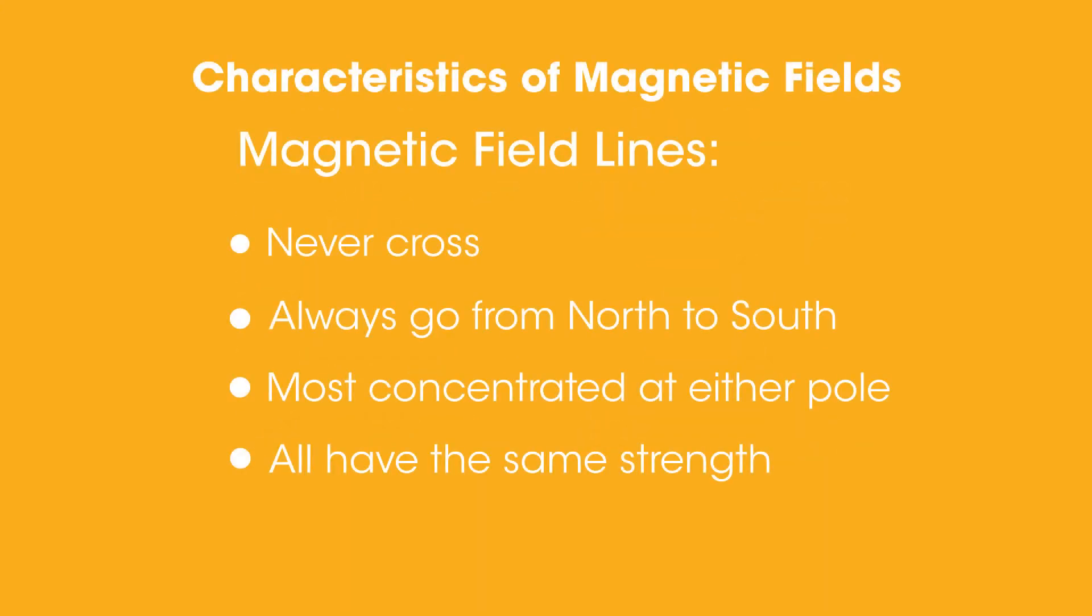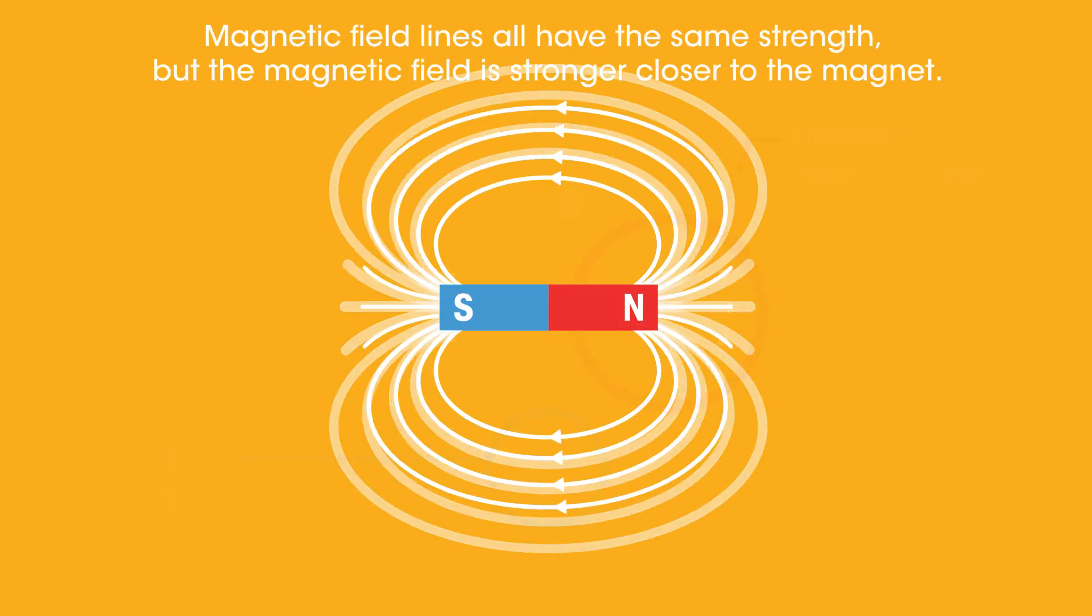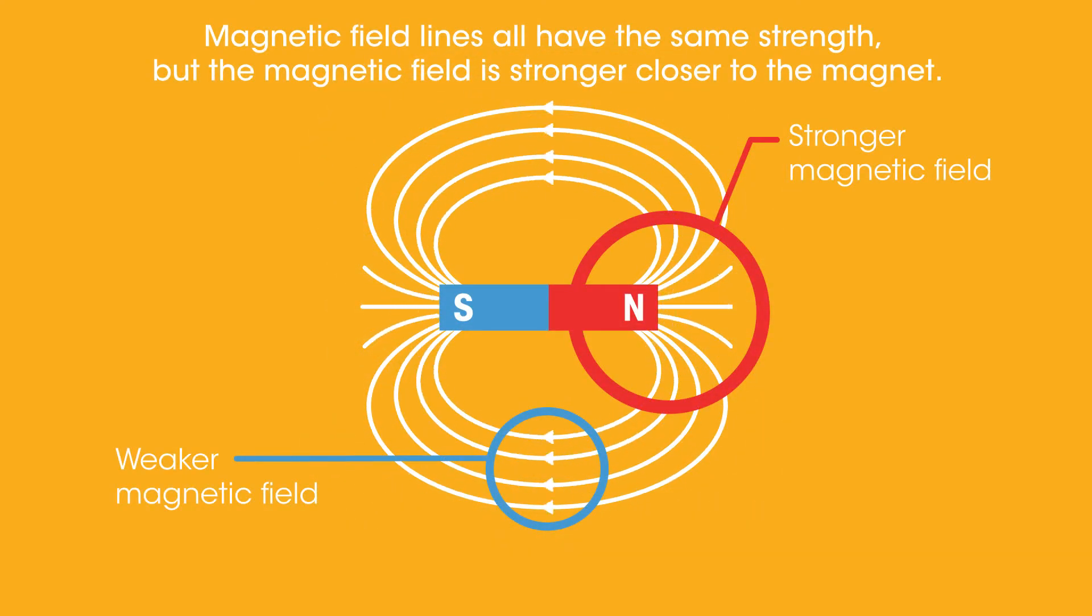Magnetic fields always follow a few basic rules. Even though magnetic field lines all have the same strength, the strength of the magnetic field is greater nearer to the magnet. Can you guess why? It's because the field lines are more concentrated, increasing the overall strength of the magnetic field.